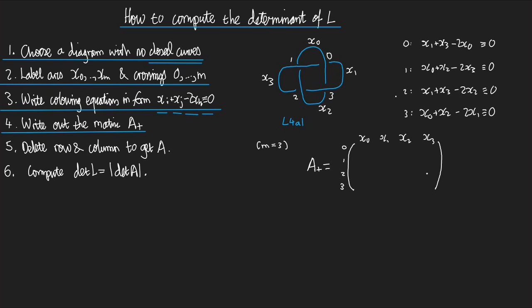What goes in an entry of the matrix? What goes in the 2 row and the x3 column? Well, I look at the colouring equation for crossing number 2. So in here I get a plus 1. What goes in row 2 under column x2? Well, I go to colouring equation number 2. I look for the coefficient of x2, that's minus 2. So my entry there is minus 2.